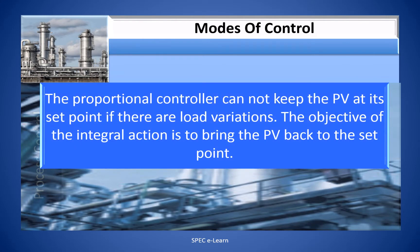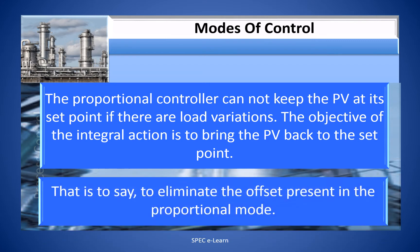Recall what we learned in the previous video under Proportional Controller. The Proportional Controller cannot keep the PV at its set point if there are load variations. The objective of the integral action is to bring the PV back to set point — that is to say, to eliminate the offset present in the proportional mode.